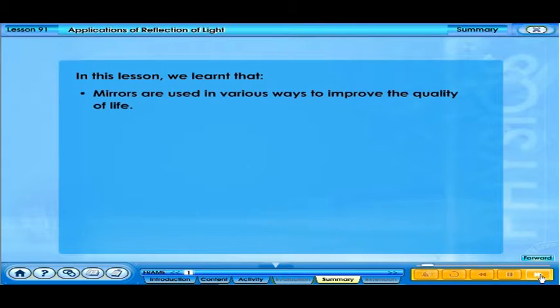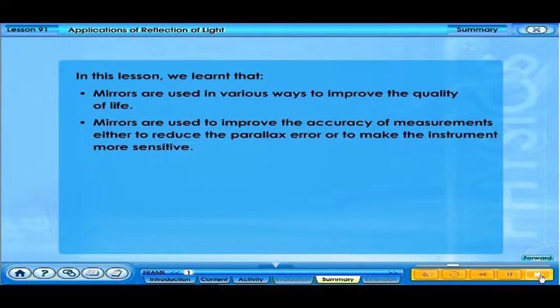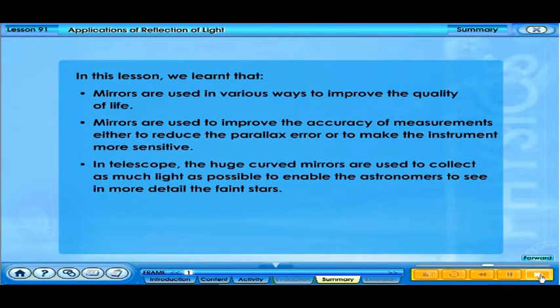In this lesson, we learnt that mirrors are used in various ways to improve the quality of light. Mirrors are used to improve the accuracy of measurements, either to reduce the parallax error or to make the instrument more sensitive. In telescopes, the huge curved mirrors are used to collect as much light as possible to enable the astronomers to see in more details the faint stars.